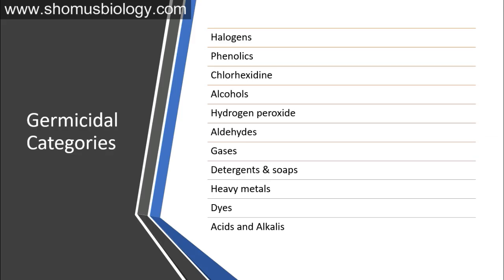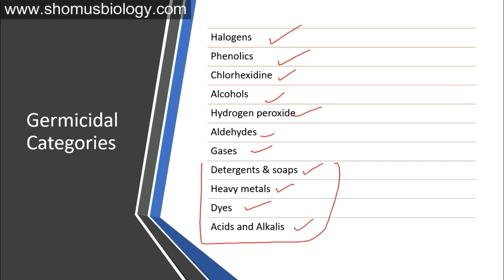The germicidal categories include: halogens, phenolics, chlorhexidine, alcohols, hydrogen peroxide, aldehydes, gases, detergents and soaps, heavy metals, dyes, acids and alkalis. The last four we commonly have in households.